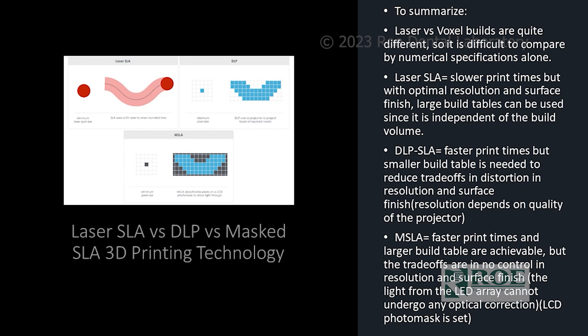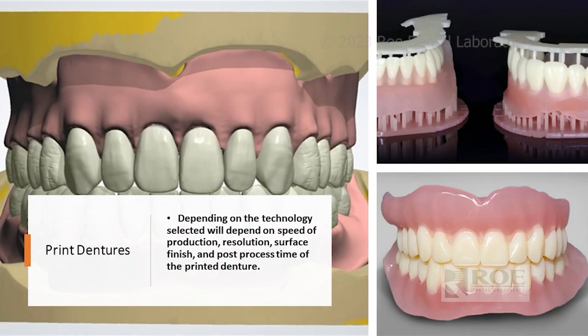DLP is more like a projector. The MSLA — mass SLA — is faster with a larger build table, but the trade-off is there's no control of resolution and surface finish. The light from the LED array cannot undergo any optical correction, and the LCD photo mask is set. Depending on the technology selected, it will determine the speed, production, resolution, surface finish, and post-process time of the printed denture.